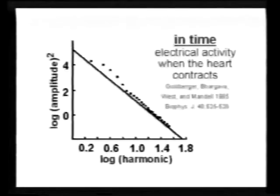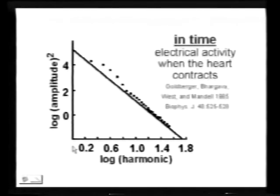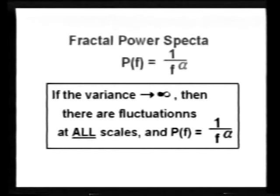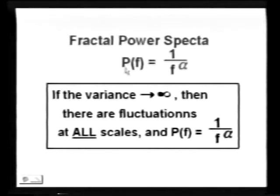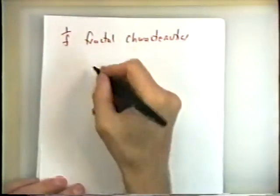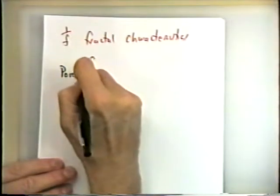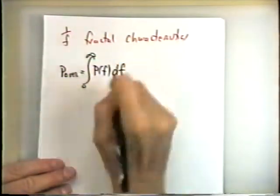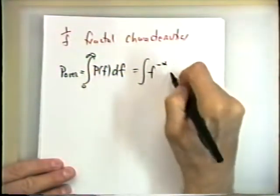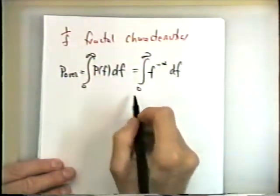Here we are — the variance. These are examples. This is an example in time: a plot of log of power spectrum amplitude. This says that the power spectrum has a 1/f form. If we integrate this, we'll find the variance goes to infinity, depending on the value of alpha. The power itself will either go to infinity at small frequencies or large frequencies, depending on the value of alpha.